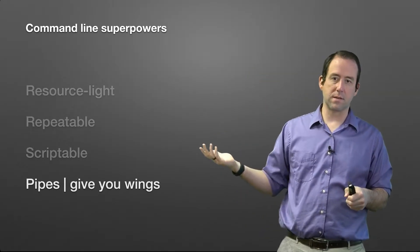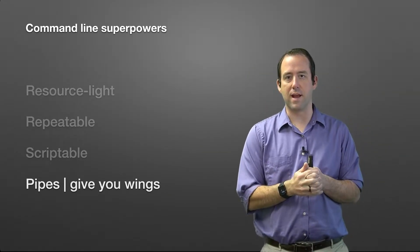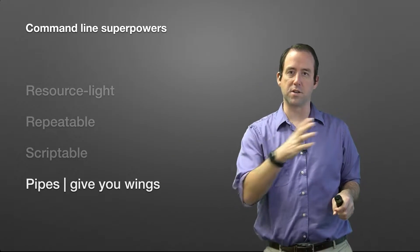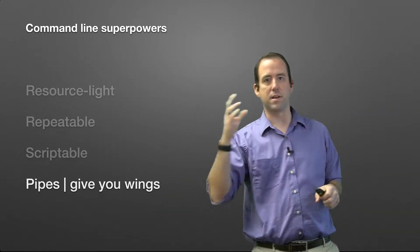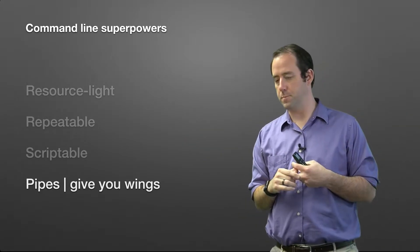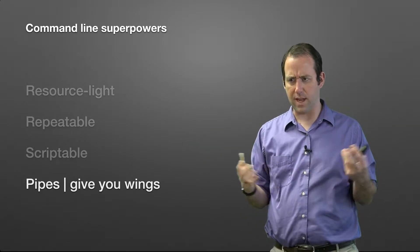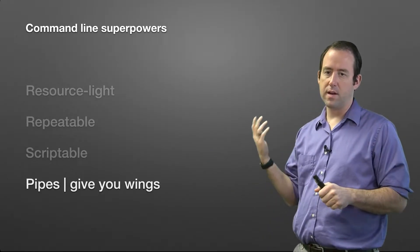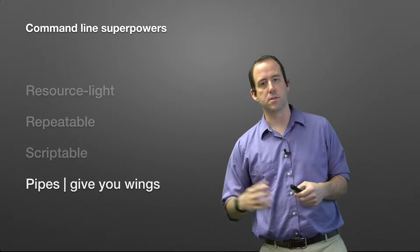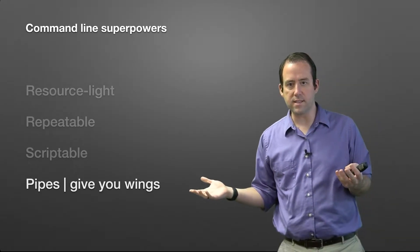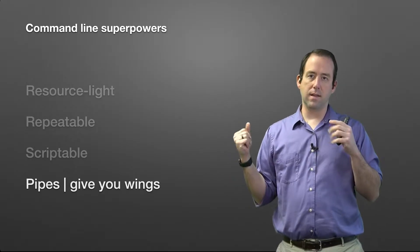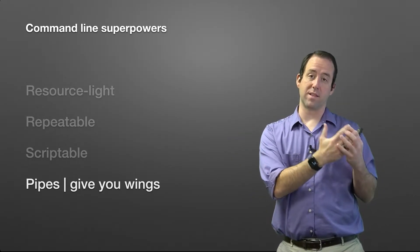We've talked about Linux command line pipes — the ability to chain commands together, taking the output of one command and feeding it into the next. It gives you wings; it's a superpower. You can do a lot of really powerful stuff from the command line, and you get all those resource-light, repeatable, and scriptable capabilities as well. These are the superpowers that make the command line the preferred way to configure a Linux server.